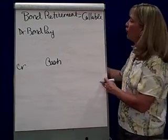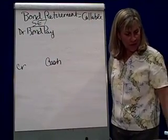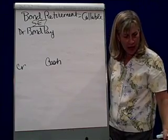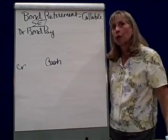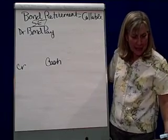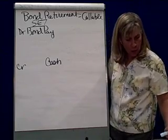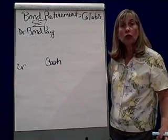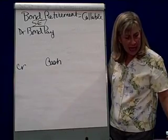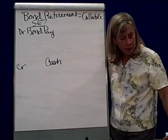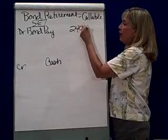Let's take a look at short exercise seven. The Geller Corporation has outstanding $400,000, 8% bonds that are callable at 104 — meaning 104%. On December 1st, immediately after the payment of the semi-annual interest and the amortization of the bond discount were recorded, the unamortized bond discount equaled $10,500. On that date, $240,000 of bonds were called and retired.